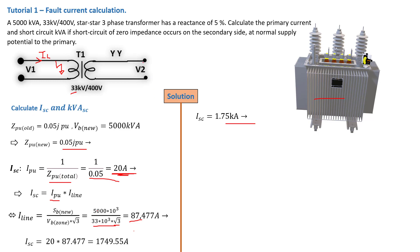That is the short circuit current that will flow if you short the secondary output. You must ensure that the circuit breaker placed there to protect this transformer — or whatever equipment is connected — is rated to handle this current without rupturing, burning, or any other failure.